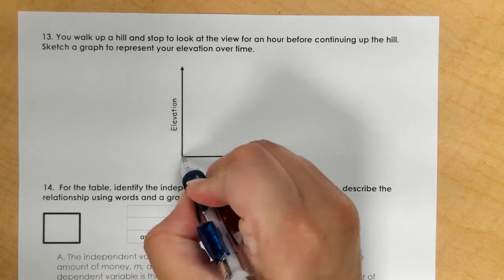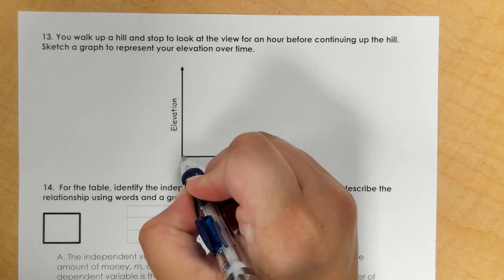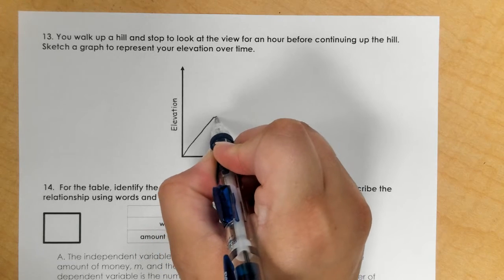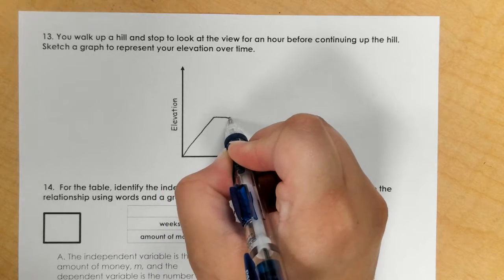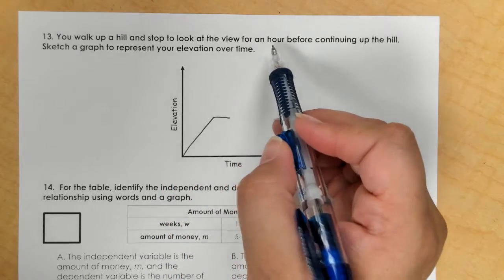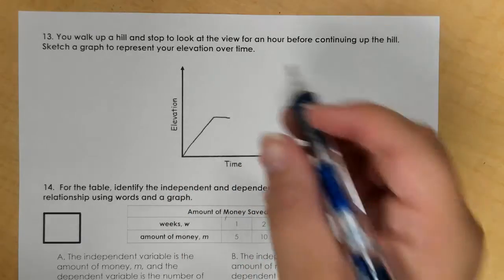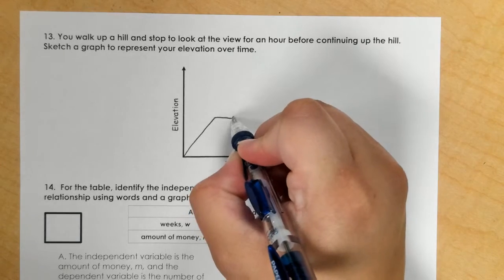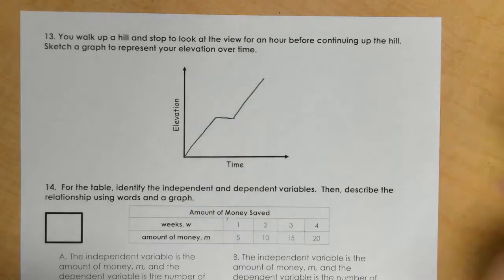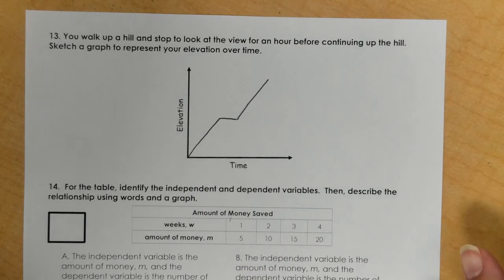So you walk up a hill and stop to look at the view. Here you are at the bottom of the hill. You walk up, stop to check out the view for about an hour, then continue up the hill. That would be my sketch of that scenario.